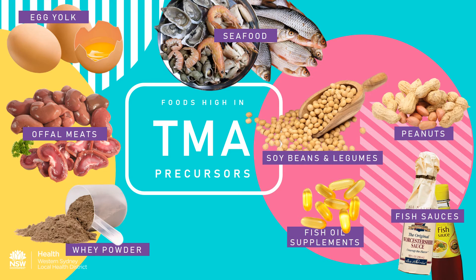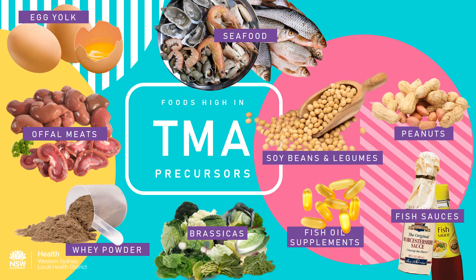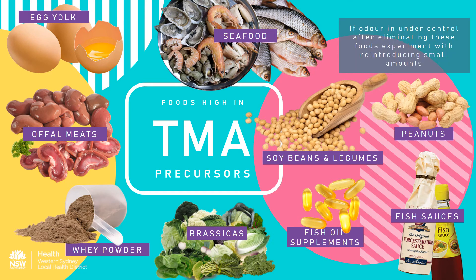Peanuts, soybeans and other legumes contain high amounts of choline. Brassica vegetables such as broccoli, cauliflower, brussel sprouts, cabbage, kale and bok choy contain a compound called indole, which may inhibit FMO3 enzyme activity and therefore could increase TMA levels. If eliminating these foods brings the odour under control, it is possible to reintroduce small amounts one at a time to determine if some can be tolerated without symptoms returning. Other factors such as high body temperature, stress, sweating and menstruation can increase odour and should be taken into account when modifying the diet.